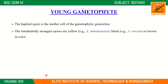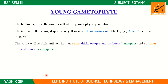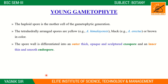Spores are tetrahedral. In Anthoceros emylensis they are yellow in color. In Anthoceros erectus they are black, and in other species brown. The spore wall is differentiated into two parts: the outer wall is the exospore and the inner part is the endospore.